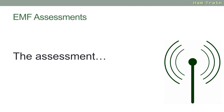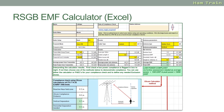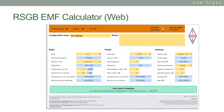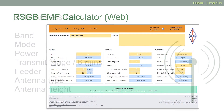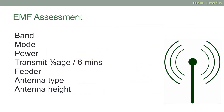So let's look at the details of how straightforward it is to comply with this new license condition. The easiest way is to perform an EMF assessment. Ofcom has released a calculator, but we strongly recommend you take a look at the RSGB's EMF calculator, available in two formats — either as a downloadable Excel spreadsheet or as a web-based tool.